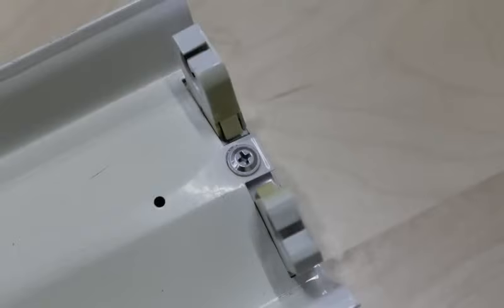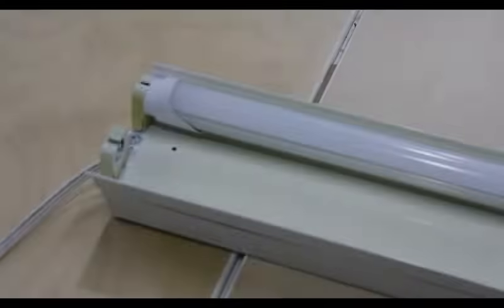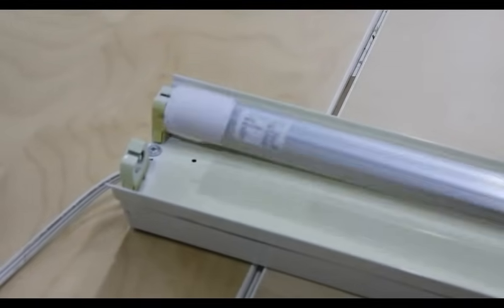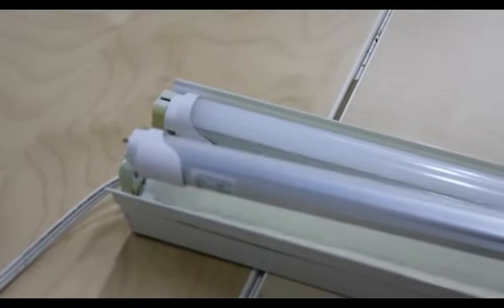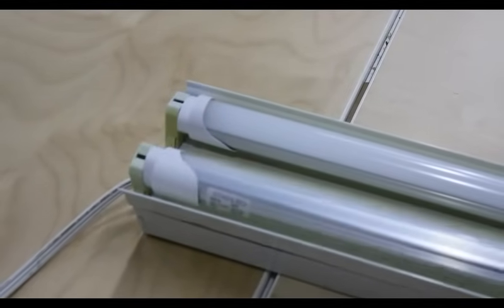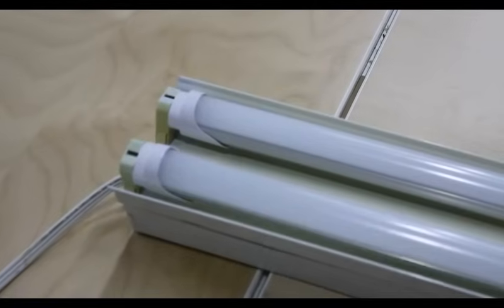Close up the lamp housing and install the new Star LED T8 label side toward the power. This holds true for both the aluminum back ballast bypass LED T8 tubes and the glass LED T8 tubes.